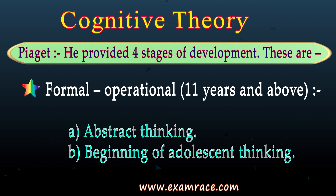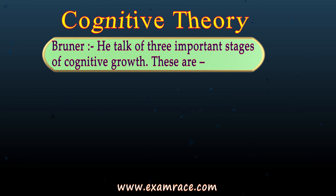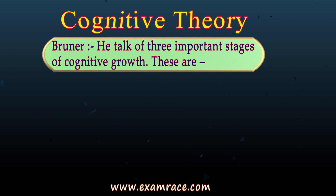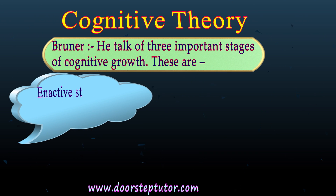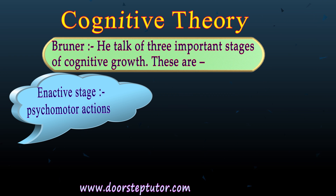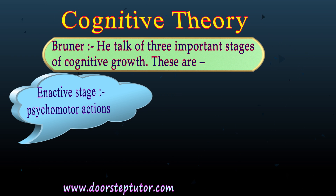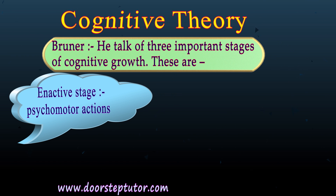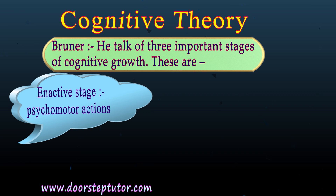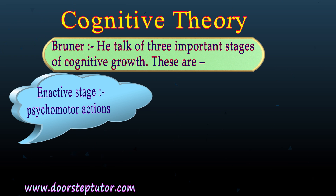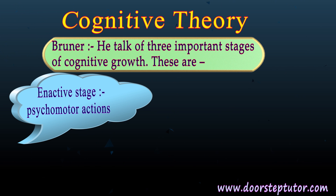During the formal operational stage a child engages in abstract thinking. Like Piaget, Bruner also talked of three important stages of cognitive growth. The first is the enactive stage, characterized by grasping things through sense organs and expressing them through physical action. It is similar to the sensory motor stage of Piaget — the child's behavior is reflected through psychomotor action, for example, a child crawls to hold a toy or an older child learns how to ride a bicycle.